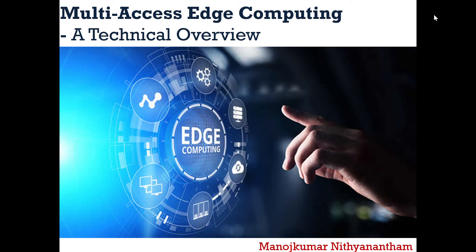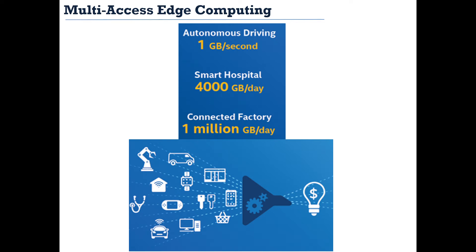However, the focus should be on the data that is getting generated out of all these devices — huge amounts of data. To give a little idea of the scale: an autonomous driving car can possibly generate 1 GB of data per second, a smart hospital 4,000 GB of data per day, and a connected factory 1 million GB per day.